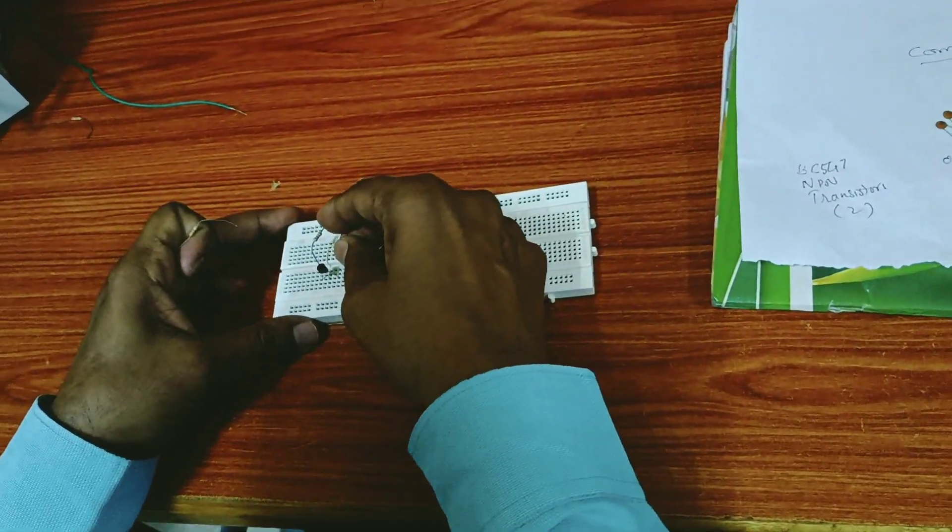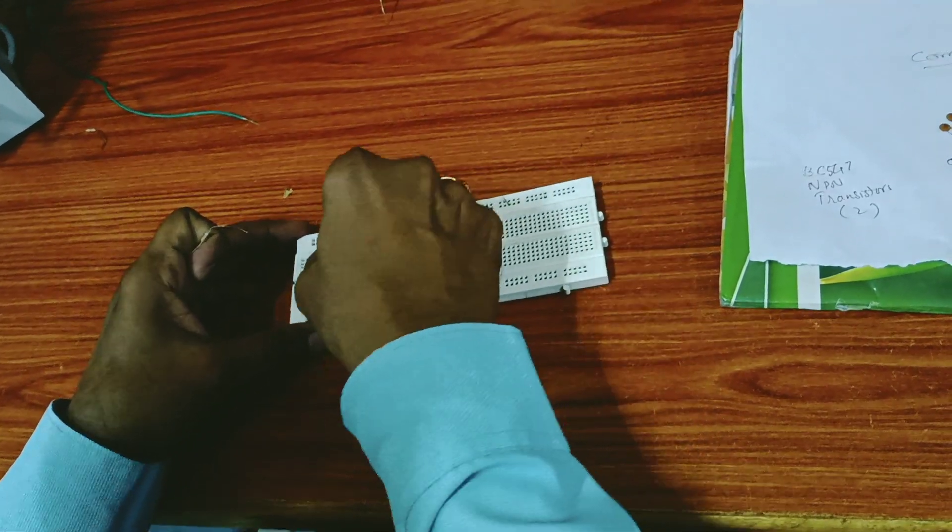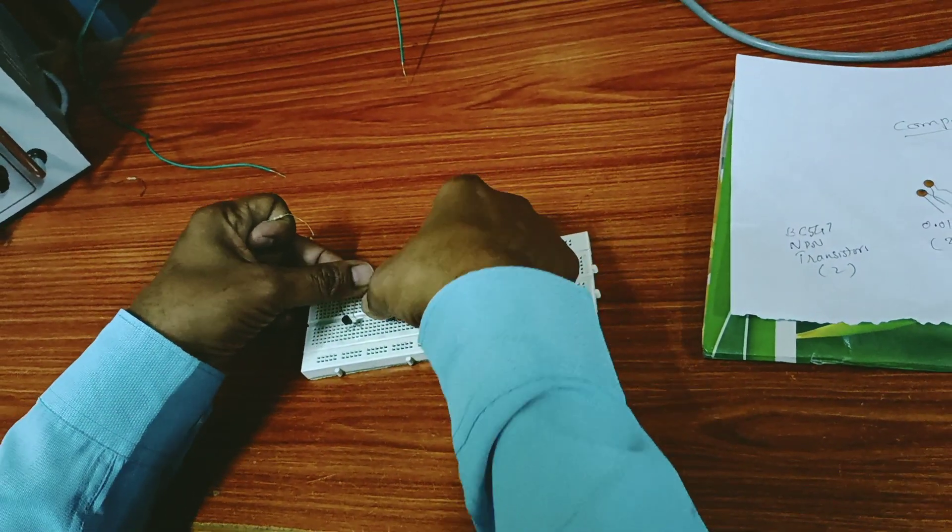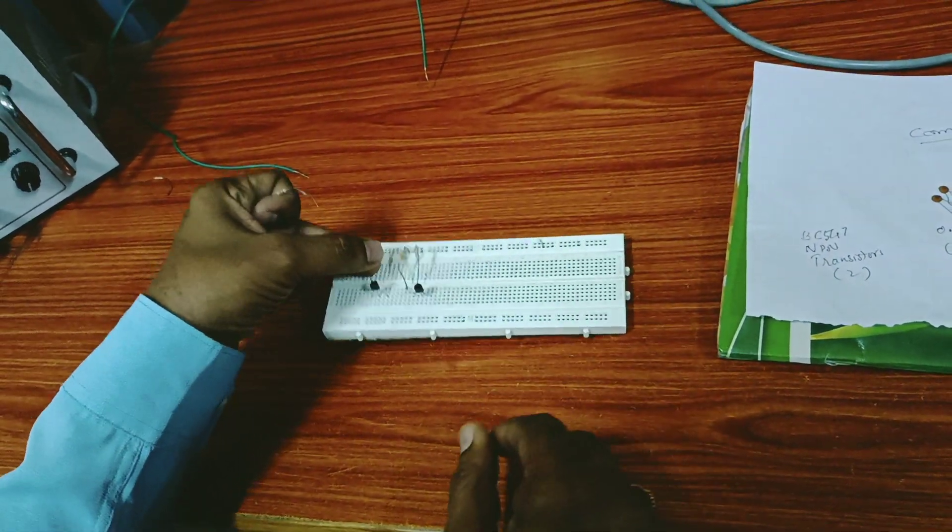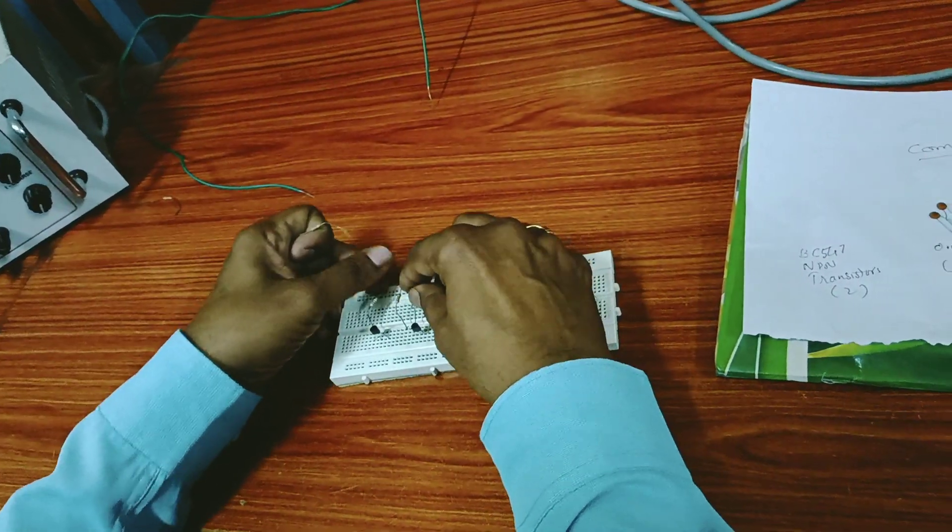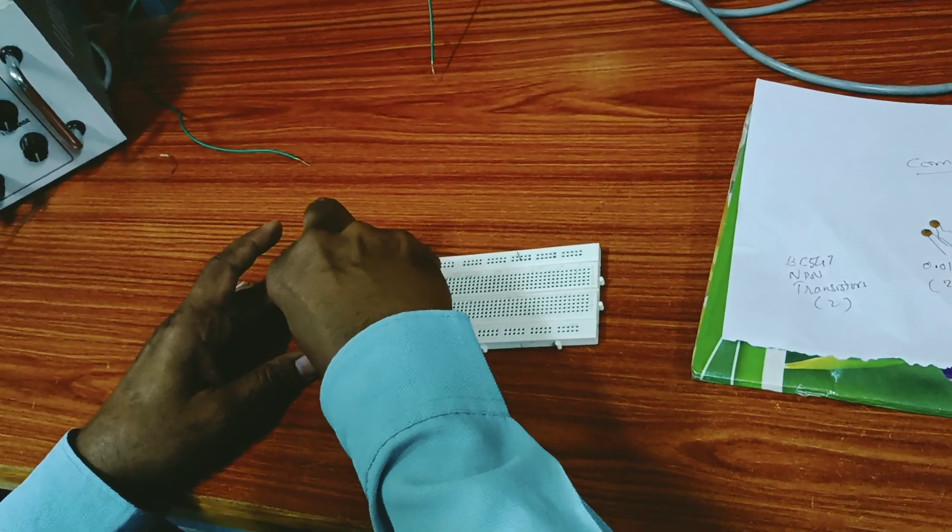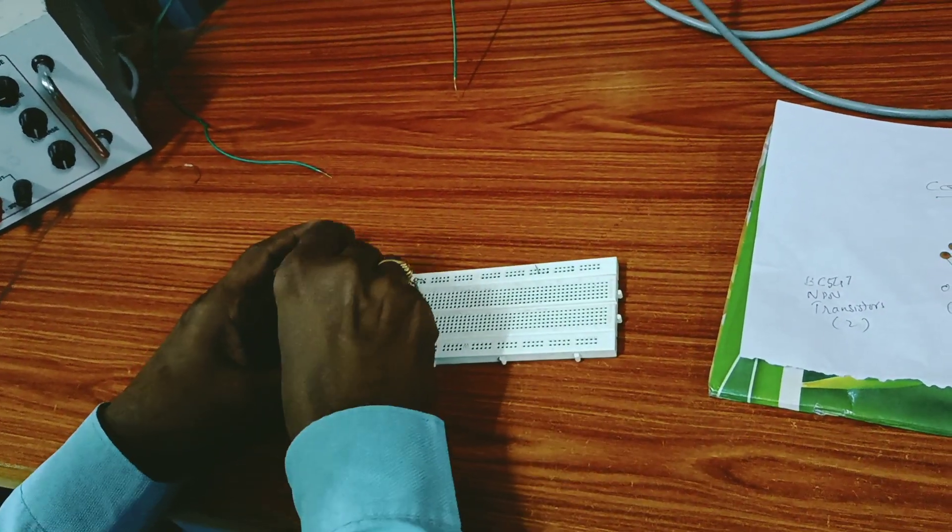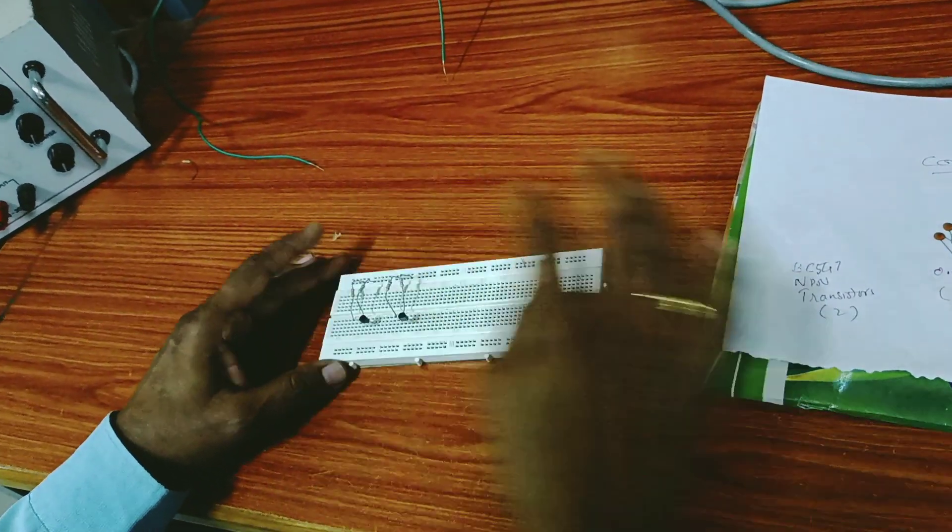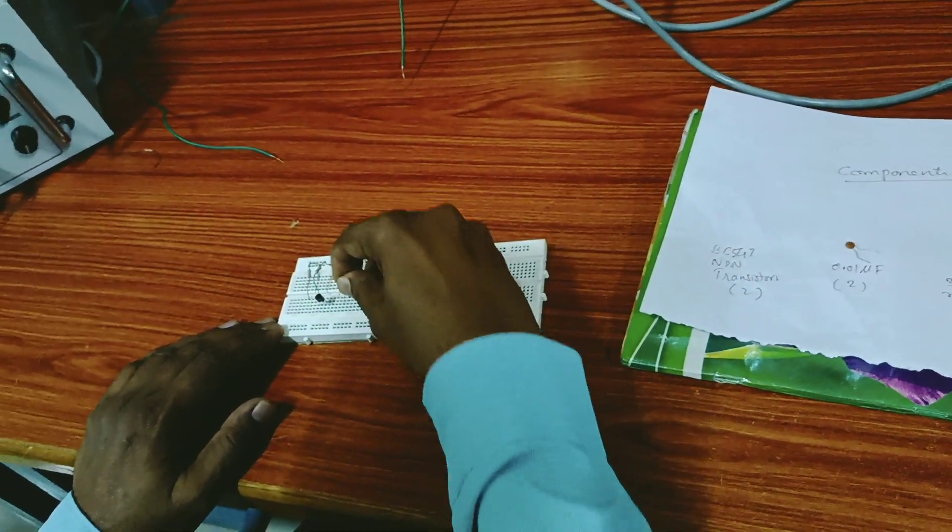Now take 33 kilohm resistor, just adjacent to that. You need to insert the components very tightly so that when you try to lift the component, the breadboard will also come up. Now again here also 33 kilohms towards the left of the 3.3 kilohm resistor.